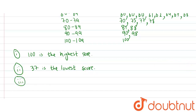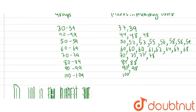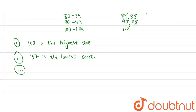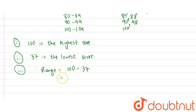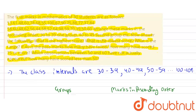The third part is: what is the range? We know that range is the difference between the highest and the lowest score. Therefore, range = highest marks − lowest marks = 100 − 37 = 63. The range is 63.